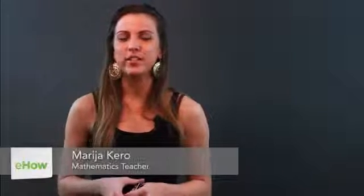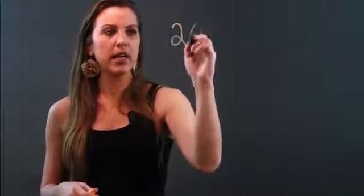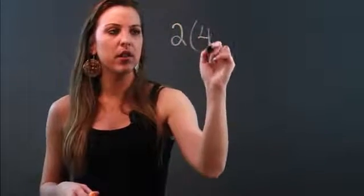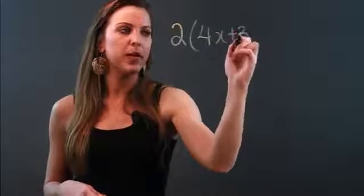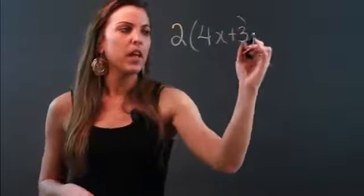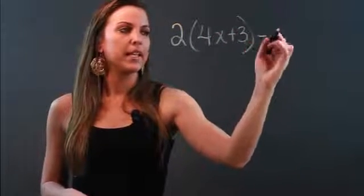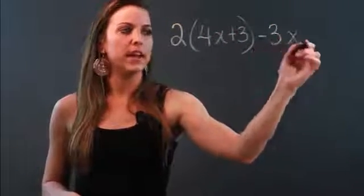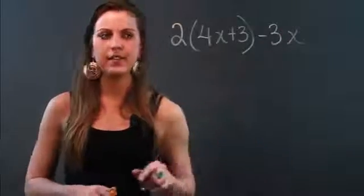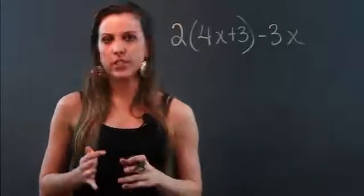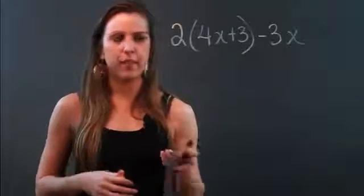Hi, my name is Maria. I'm a mathematician and today I'm going to show you how to do the distributive property and combining like terms. I'm going to give you an expression: 2 times the quantity of 4x plus 3, minus 3x, and I want to simplify this. You always distribute before you combine.